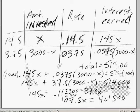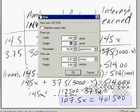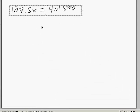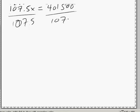And then we divide. Let's go ahead and edit. So now we divide 107.5x. 107.5, and again we'll use our calculator. 401,500 divided by 107.5.